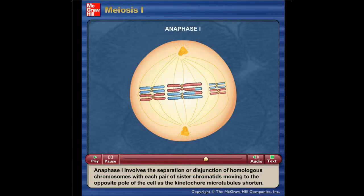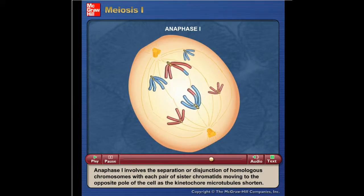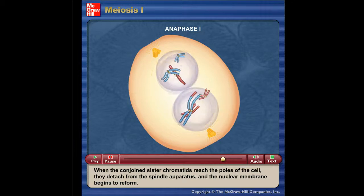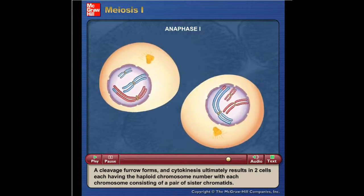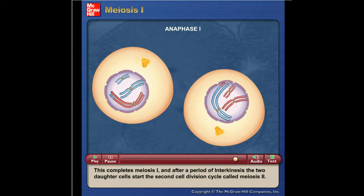Anaphase one involves the separation of homologous chromosomes, with each pair of sister chromatids moving to the opposite pole as kinetochore microtubules shorten. When the conjoined sister chromatids reach the poles, they detach from the spindle apparatus and the nuclear membrane begins to reform. A cleavage furrow forms and cytokinesis results in two cells, each having the haploid chromosome number with each chromosome consisting of a pair of sister chromatids. This completes meiosis one, and after interkinesis, the two daughter cells begin meiosis two.